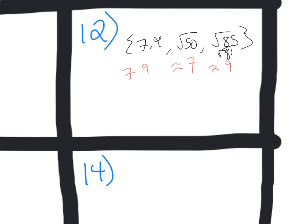So let's write those in order. Obviously you would put square root of 50 first. That's the smallest. Then you could put 7.9 next. And then you could put square root of 85 at the very end. And that would be your numbers in order from least to greatest.